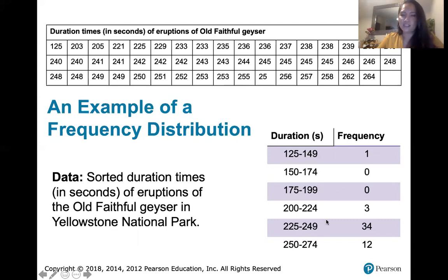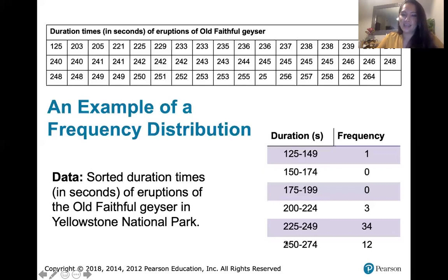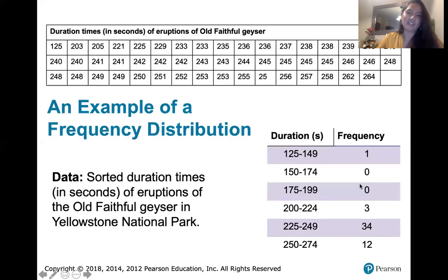What's good about this is it takes the list of data and allows us to start making sense of the patterns. We see just from looking at this chart that duration time tends to be on the higher end — one very low duration between 125 and 149 seconds, and most of the duration times are around 225 to 249. I'm grouping each piece of data by duration into different classes and looking at the frequency in each class.